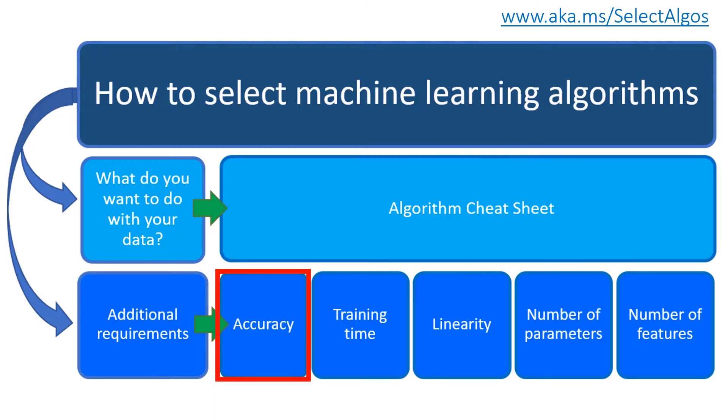So let's start with accuracy. Accuracy in machine learning measures the effectiveness of a model as a proportion of true results to total cases.